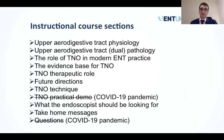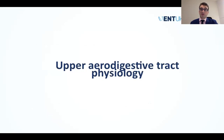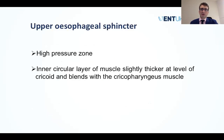Starting with the physiology: the upper esophageal sphincter, primarily consisting of the cricopharyngeus muscle, is a high-pressure zone that controls the flow of the bolus from the hypopharynx into the cervical esophagus, and vice versa prevents reflux of contents from the esophagus up into the laryngopharynx.